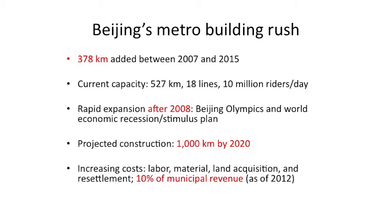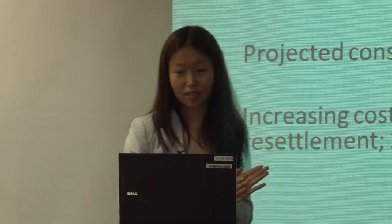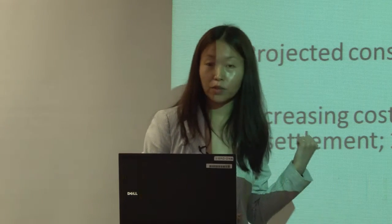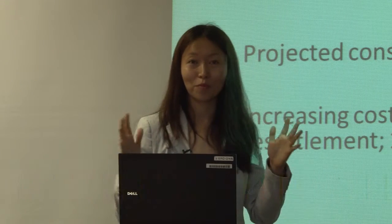The construction has been very fast, but over the past two or three years the cost has become quite high. Labor is getting more expensive, materials are more expensive, and after 2009, land taken from residents or enterprises for subway construction must be compensated at market rate. So the city also needs to spend a lot of money on land acquisition. For the year 2012, the city basically spent 10% of its revenue on just one project: the subway.